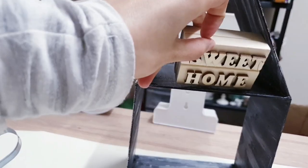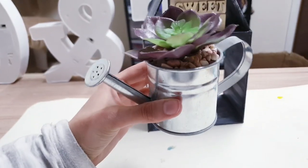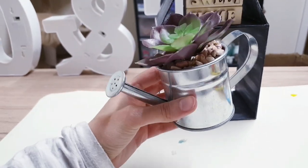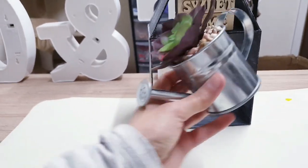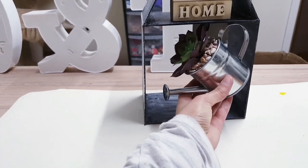Then you're going to just place your block inside the roof, and then I have this watering can. It was a thrifted item, so I'm going to hot glue that inside in the corner.